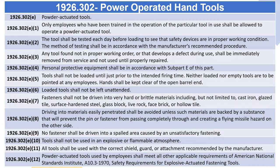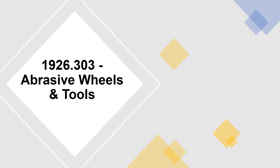1926.302(e)(9): No fastener shall be driven into a spalled area caused by an unsatisfactory fastening. 1926.302(e)(10): Tools shall not be used in an explosive or flammable atmosphere. 1926.302(e)(11): All tools shall be used with the correct shield, guard, or attachment recommended by the manufacturer. 1926.302(e)(12): Powder actuated tools used by employees shall meet all other applicable requirements of American National Standards Institute A10.3-1970, Safety Requirements for Explosive Actuated Fastening Tools.